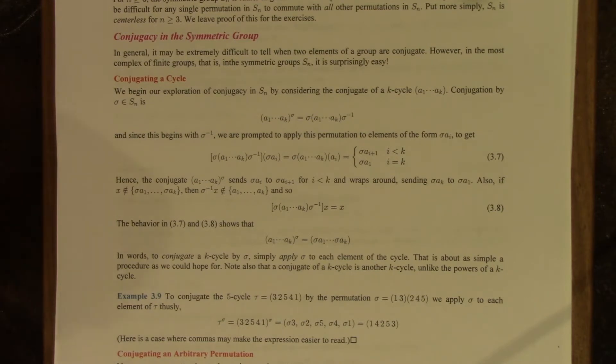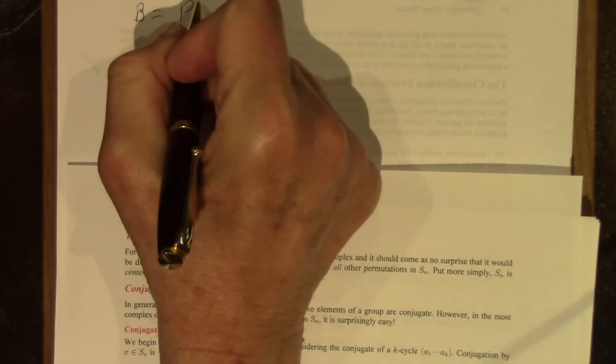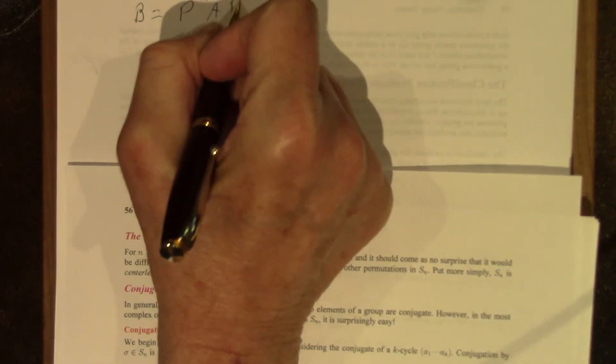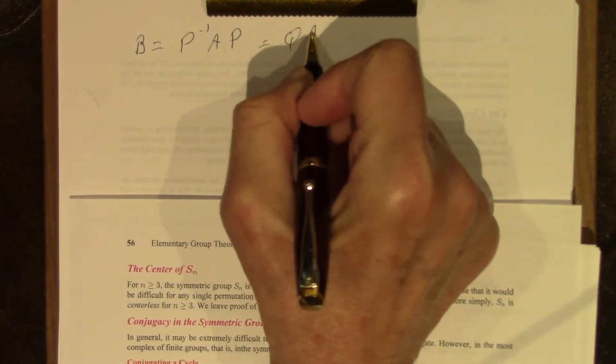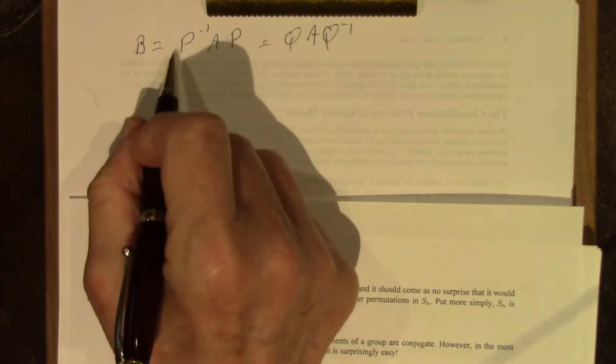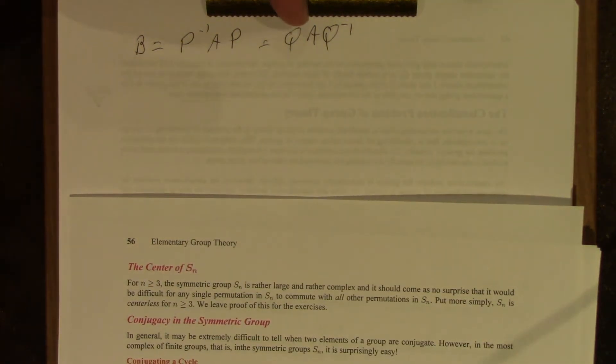Two matrices are similar. Let me write this down here. B and A are similar if you have a relationship like that, or you can put the inverse on the other side, because P is invertible. Well, this is conjugation. B is a conjugate of A.